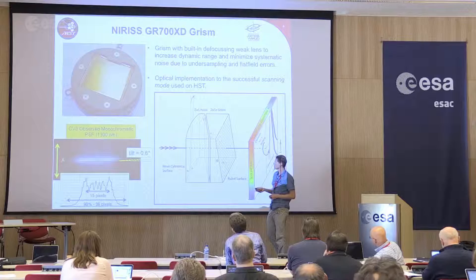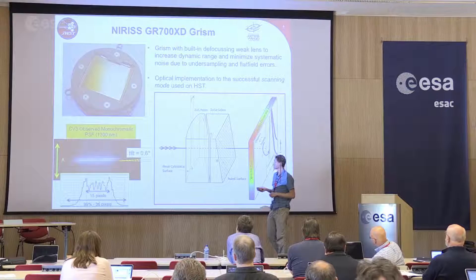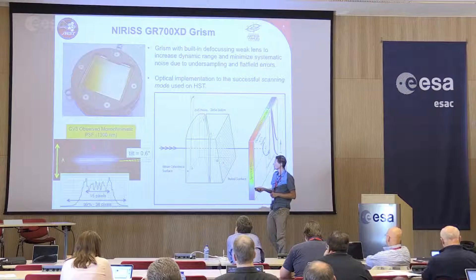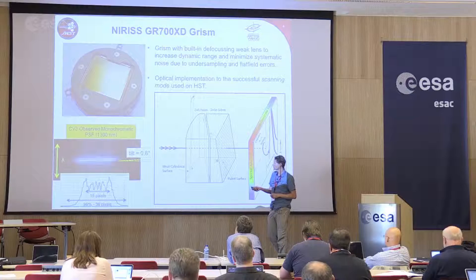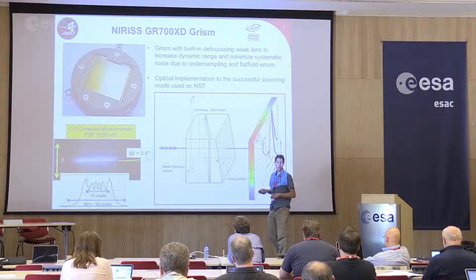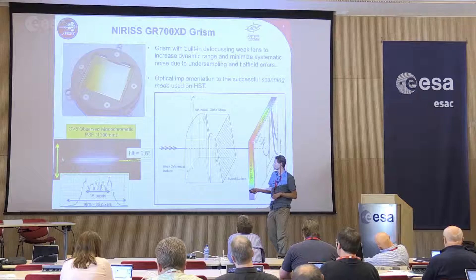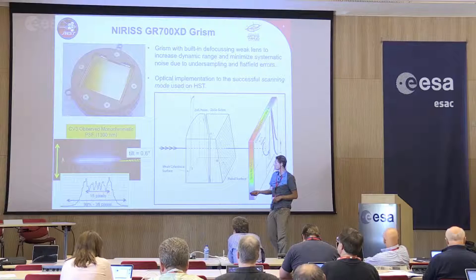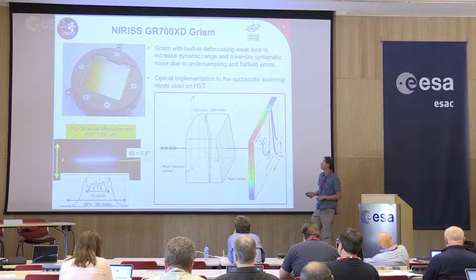To give you an idea of how much spreading occurs: here's an image from the CV3 campaign of the PSF at a single wavelength — a monochromatic source at 1,300 nanometers. The spectral direction is along here, and we still have a very good spectral resolution of about two pixels for the half maximum. But along the spatial direction, we've spread the light out much more than the typical two pixels. From peak to peak, you get a double-horned profile with a few wiggles in between — about 15 pixels peak to peak. If you want 99% of the light, you're looking at about 36 pixels.